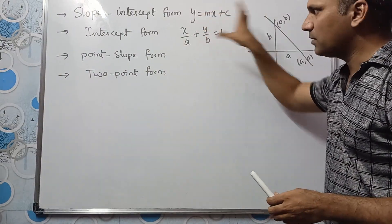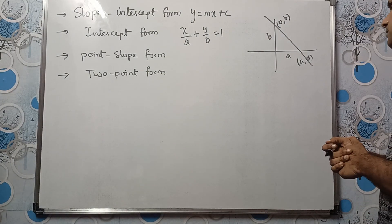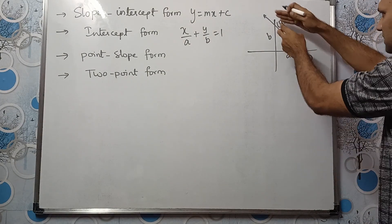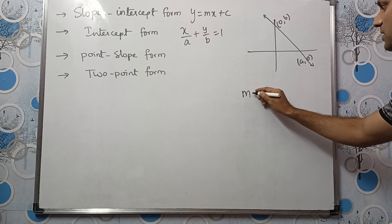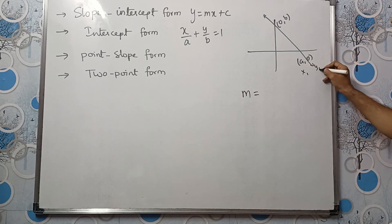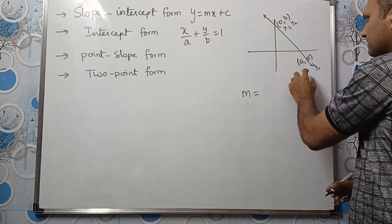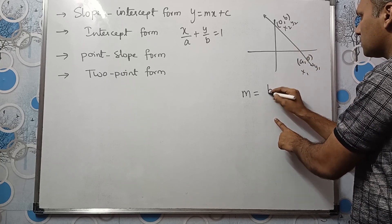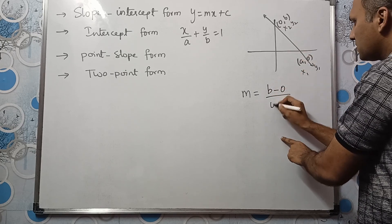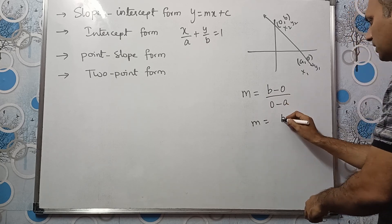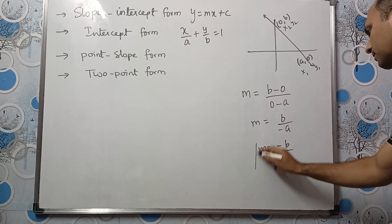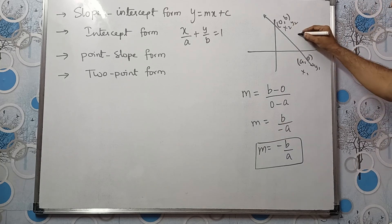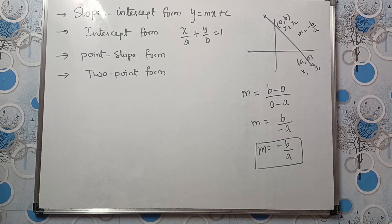Let us derive x/a + y/b = 1. The straight line passes through (a, 0) and (0, b). Taking (a, 0) as (x1, y1) and (0, b) as (x2, y2), the slope m = (b - 0) / (0 - a) = -b/a. So the slope of this straight line is -b/a.